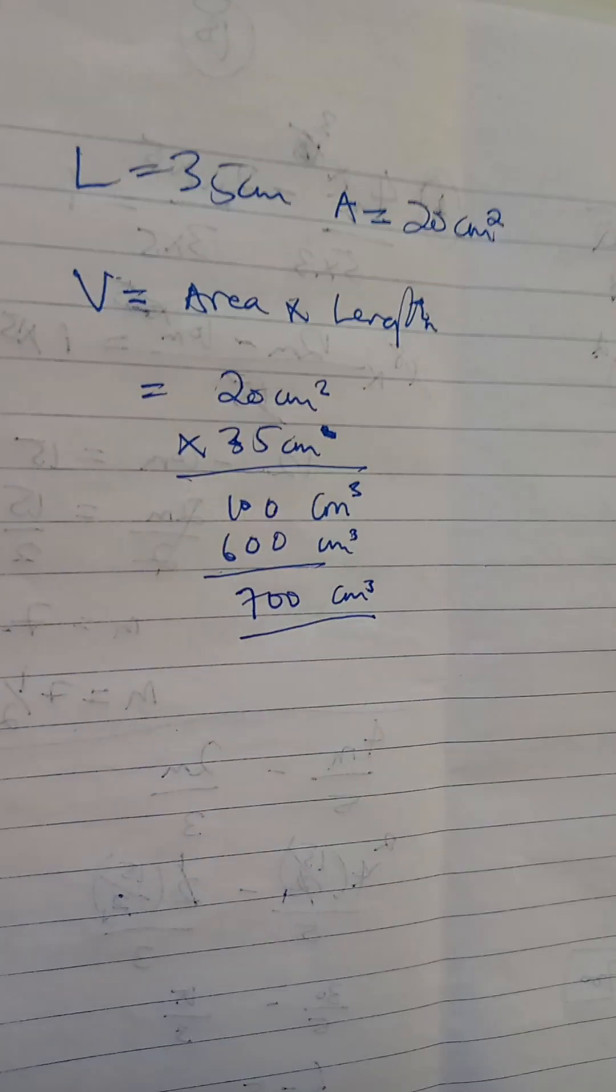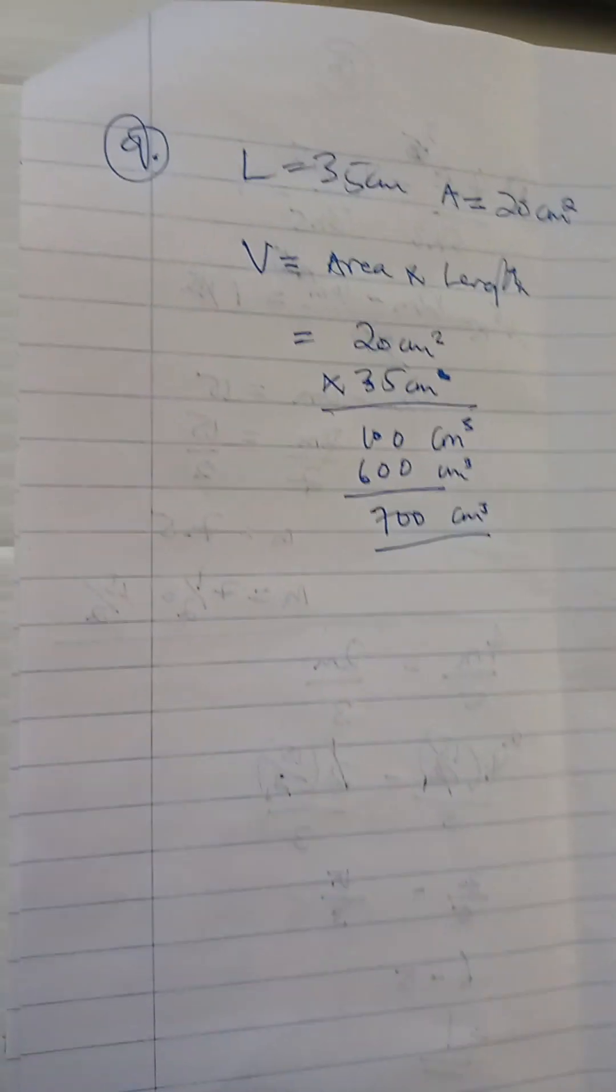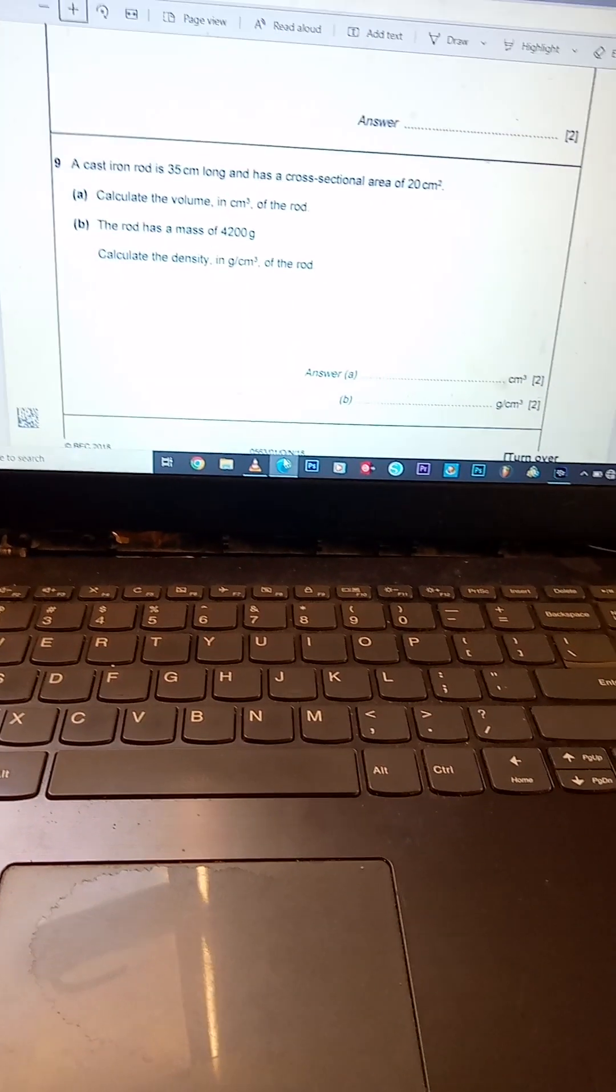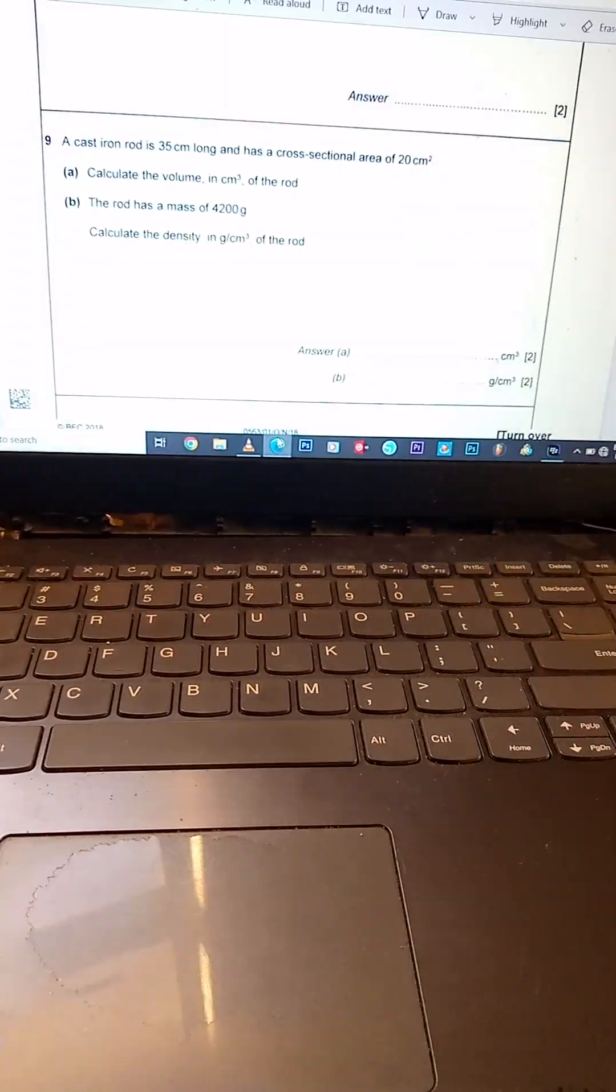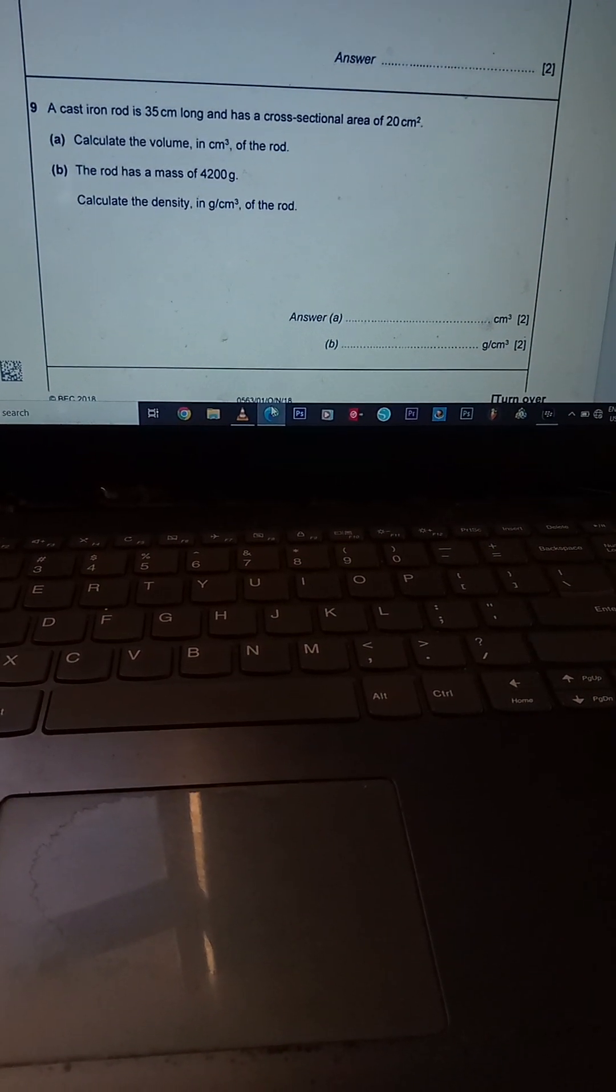So that's 700 cubic centimeters. Right. Now part b, what does b say? B says the rod has a mass of 4200 grams.